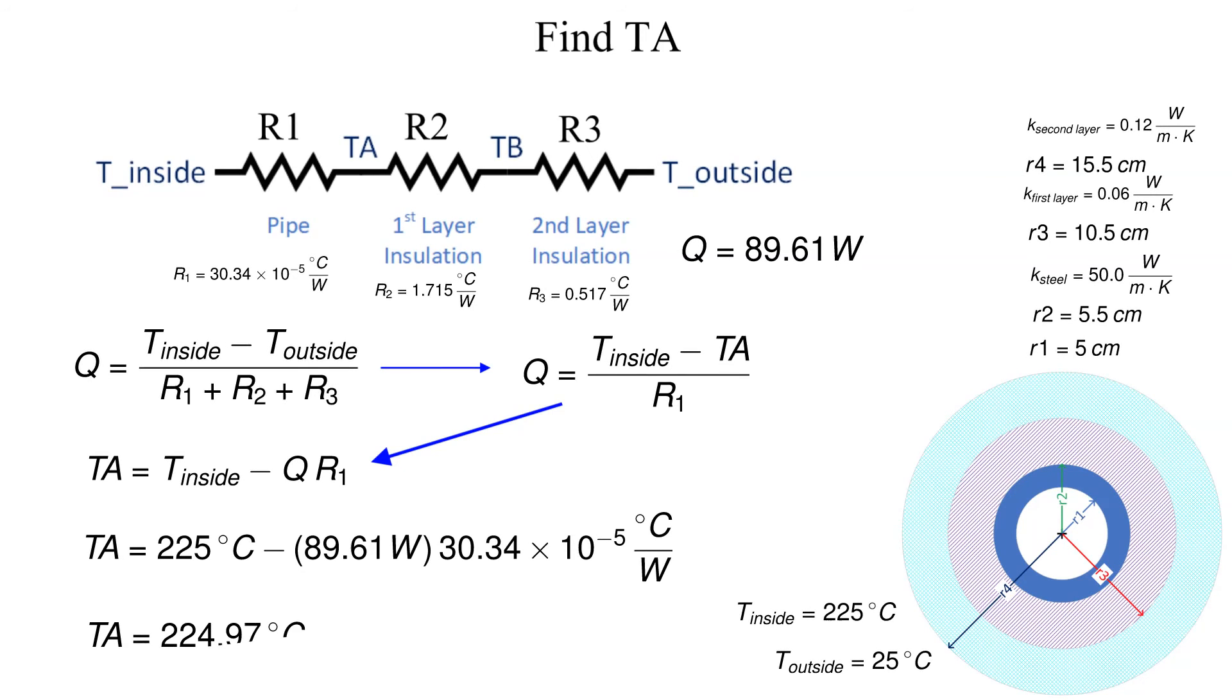There is very little temperature drop across the steel pipe. This is not surprising since the conductivity of the steel is significantly greater than the layers of insulation. It is the layers of insulation that are limiting the heat flow.